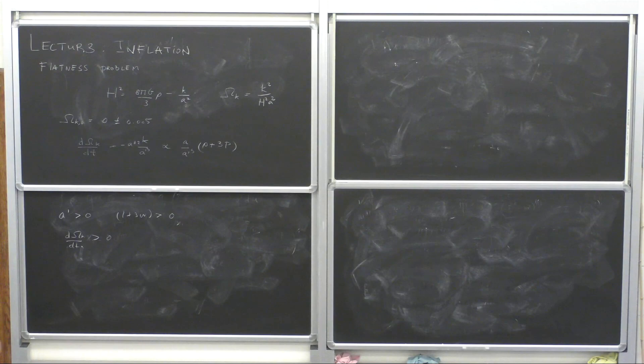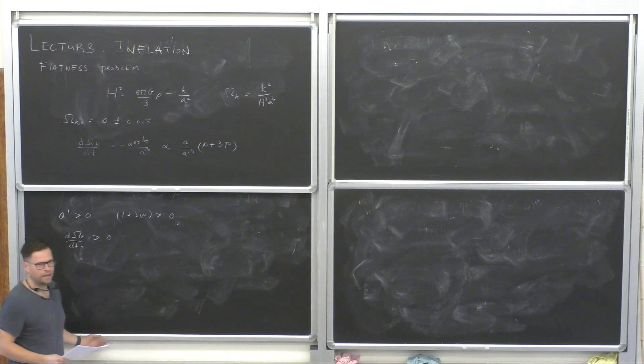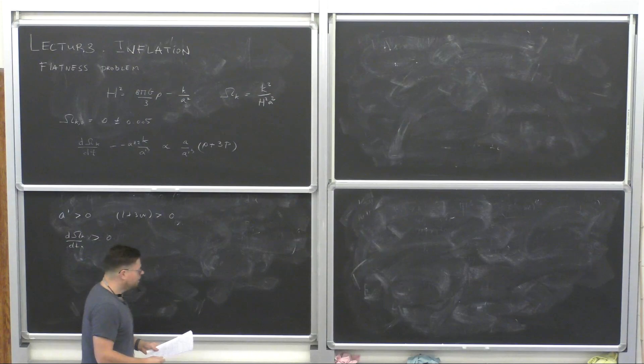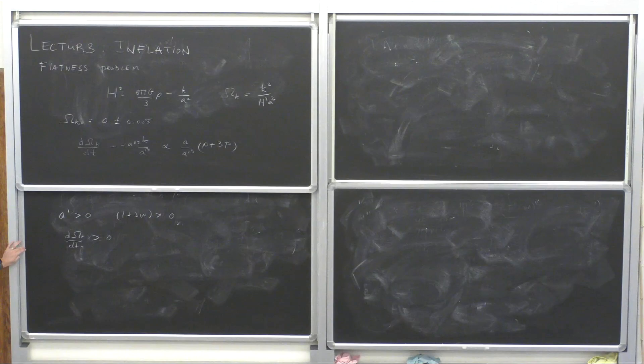If Ω_K is small now or very close to zero, then it must have been even smaller in the past. If it's exactly zero, the problem is over — but then the question is why it's exactly zero. If it's not exactly zero, it must have been smaller in the past, and the question is why. This is the flatness problem.